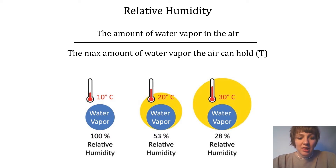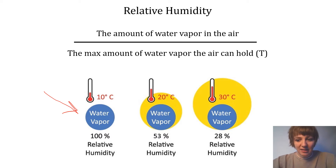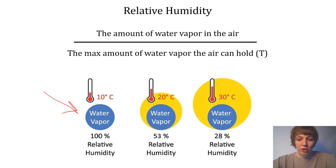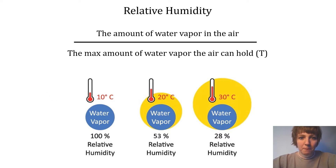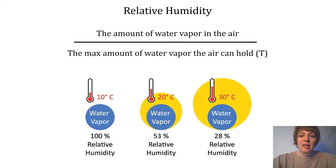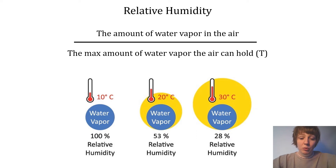In this image, the yellow dot and the blue dot are the same size — the air is holding all of the moisture that it possibly can in the form of water vapor. Air that is at 100% relative humidity is saturated with water vapor.